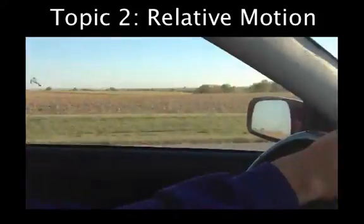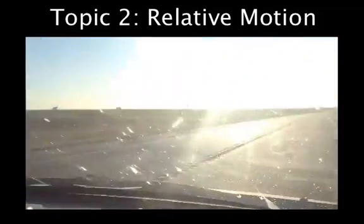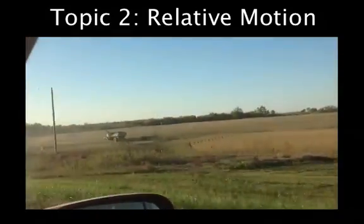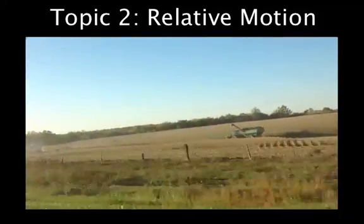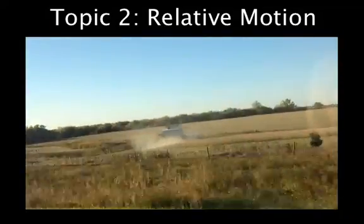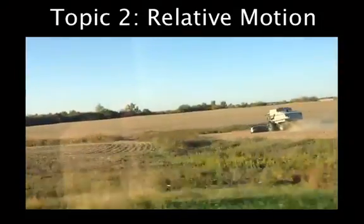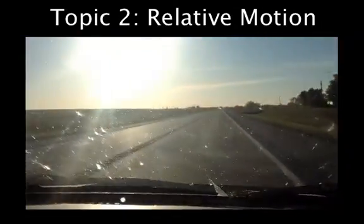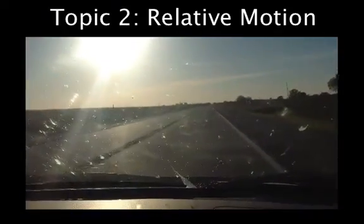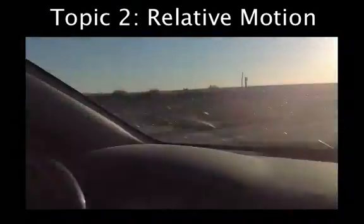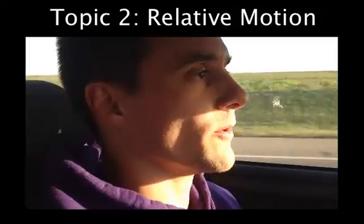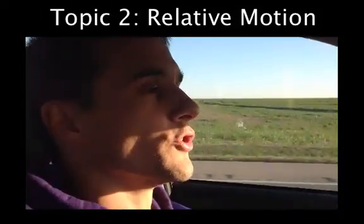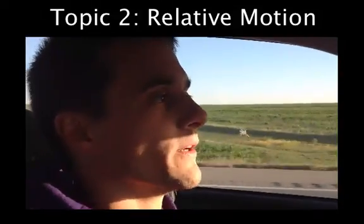We've got a combine moving right here. To a fixed point, that combine is moving at a certain speed. But right now, relative to us, it's moving slower because we are gaining on it and now blowing right by it. When talking about motion in regards to a fixed reference point it's pretty simple, but it gets more complicated when we're talking about motion in reference to moving objects or moving reference points.